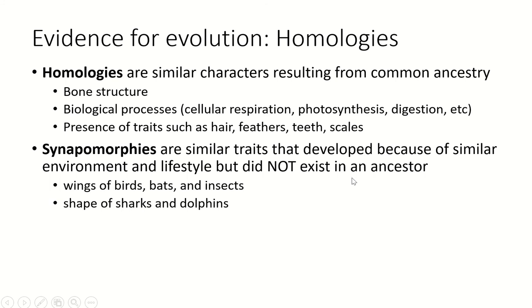When we left last time, we had started talking about homologies as evidence for evolution. We talked about what homologies are — that is, similar characteristics resulting from common ancestry. This is important because homologies such as similar bone structure in vertebrate animals and similar biological processes are present because they were there in a common ancestor.